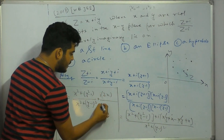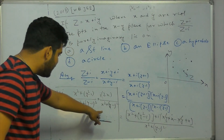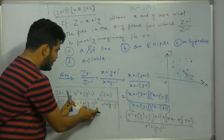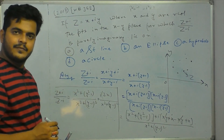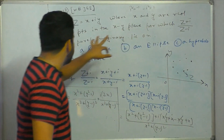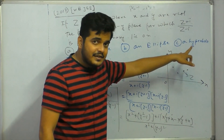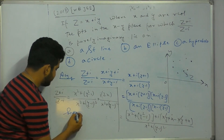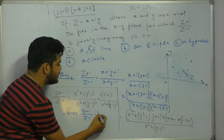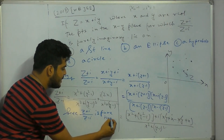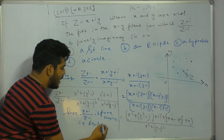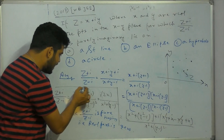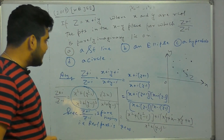We can do this: y, x squared plus y minus 1 whole squared — then in a plus i into b form, the complex system is real plus i into real. So, z plus i by z minus i is purely imaginary. How many points are purely imaginary? Which points are the same? Since z plus i by z minus i is purely imaginary, that means the real part is 0. This part is 0, so real part is 0.